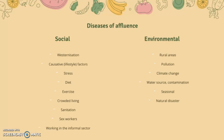Causes of diseases of affluence include social causes such as westernization and lifestyle factors — stress, diet, and exercise. Westernization refers to movements towards processed foods and fast foods. Other factors include crowded living, sanitation, and sex workers working in the informal sector.